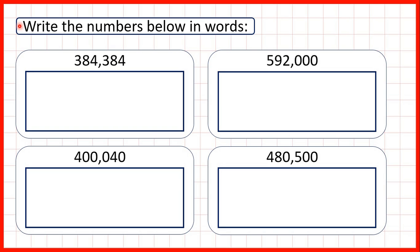We need to write the numbers below in words. So here we have six-digit numbers. And when we have numbers shown in digits, there will usually either be a comma or a space between the thousands digit and the hundreds digit. And that helps us to write the number in words.